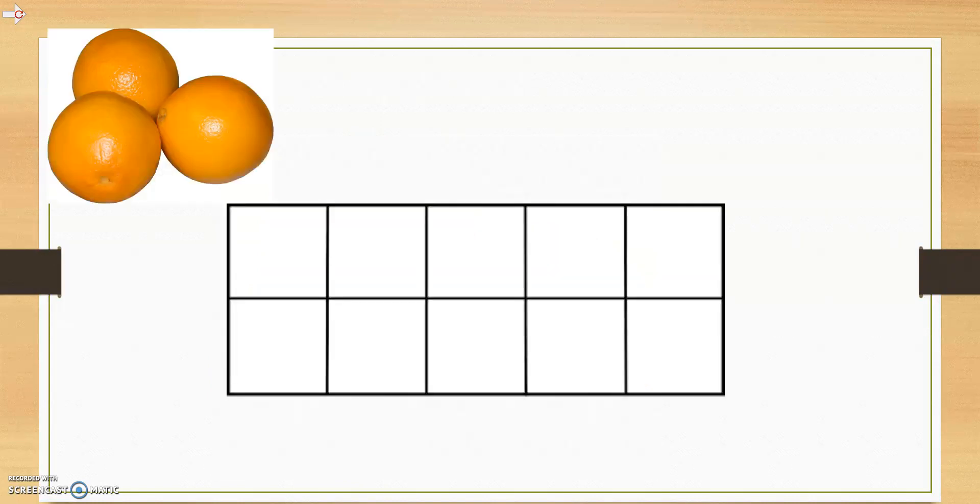Now, can you show me how many oranges there are on the 10 frame? 1, 2, 3. So, we have our 3 oranges on the 10 frame. We can also arrange the cubes in a different way to show the 3 oranges.